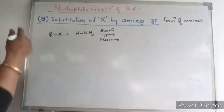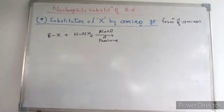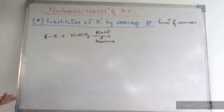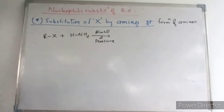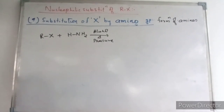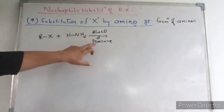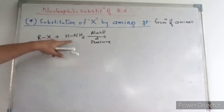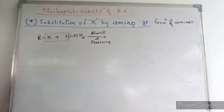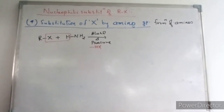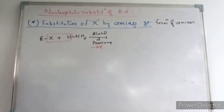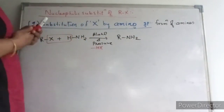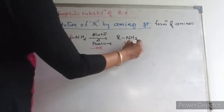The 9th substitution reaction is substitution of halogen by amino group. So you will be getting R-X converted into R-NH2; you are getting amines. The product will be alkyl halide converted into amines. When heated with excess of alcoholic ammonia under pressure, the alkyl halide yields primary amines. The alkyl halide reacts with ammonia, HX is eliminated, and the product is R-NH2. If nitrogen is attached to only one carbon, this is called a primary amine.